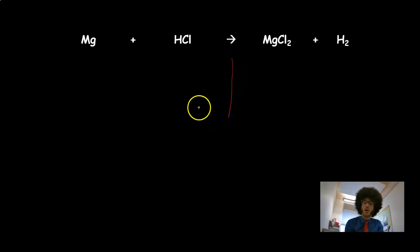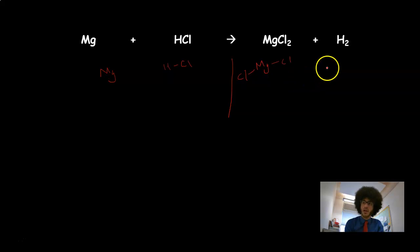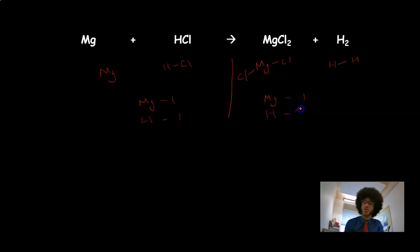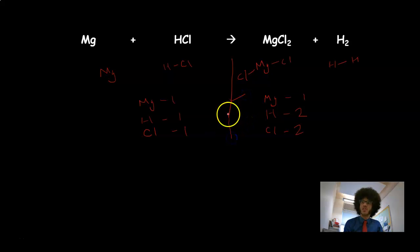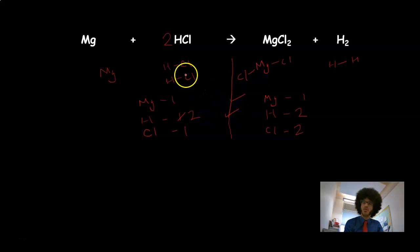Next example: magnesium reacting with hydrochloric acid to form magnesium chloride and hydrogen. Drawing out: Mg, HCl, MgCl₂, and H₂. Counting: Mg = 1 on both sides (unlikely to change). Hydrogen: 1 on the left, 2 on the right — a big flag. Chlorine: 1 on the left, 2 on the right. To fix hydrogen and chlorine, I add another HCl molecule on the left, giving 2 hydrogens and 2 chlorines — now balanced.